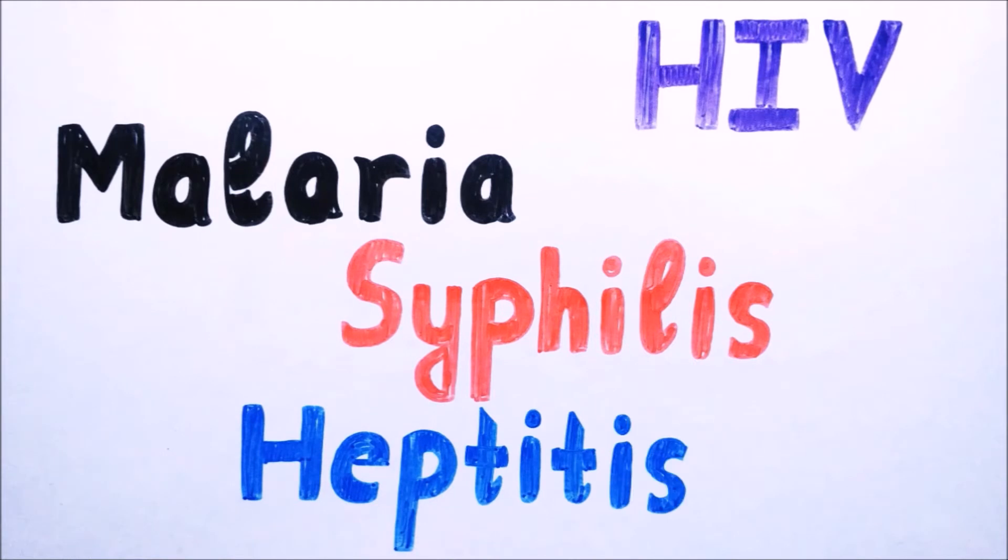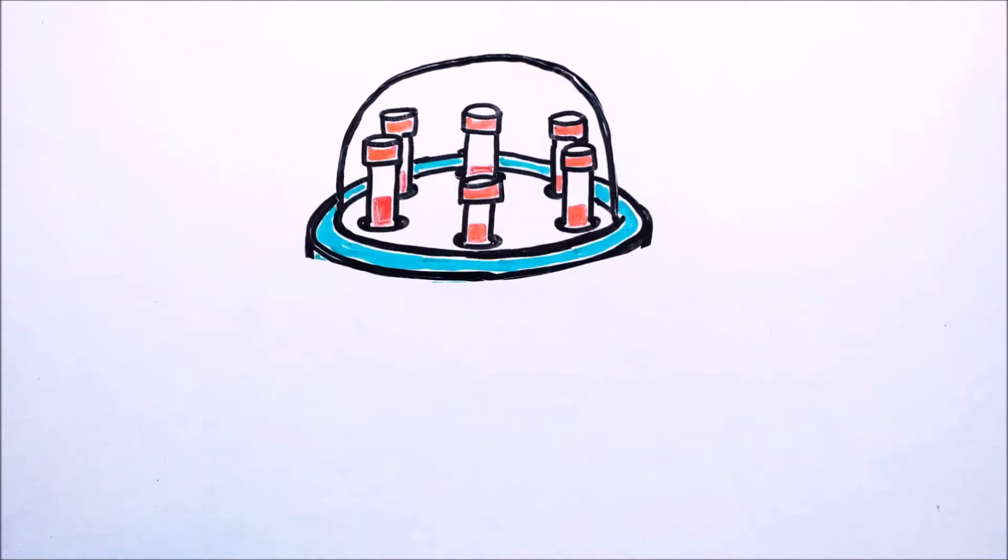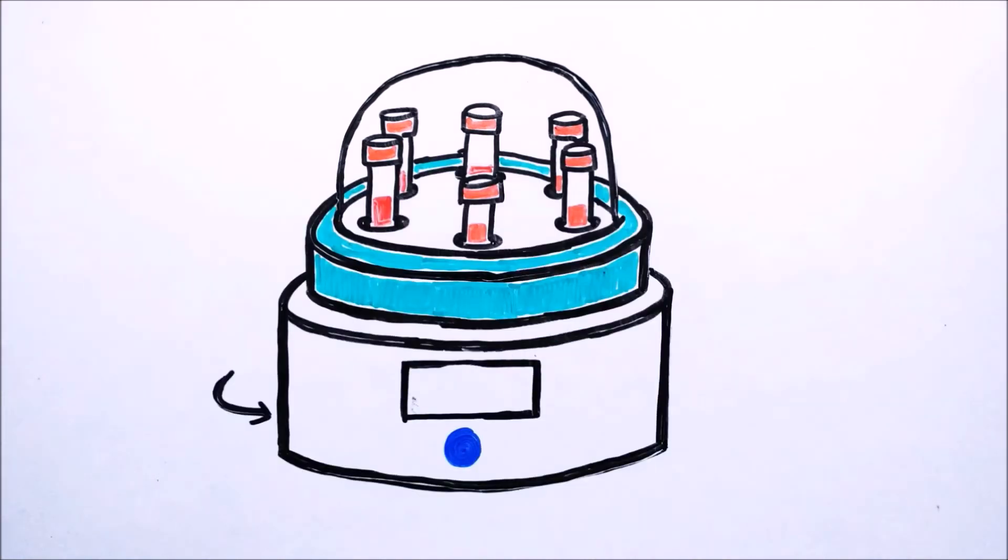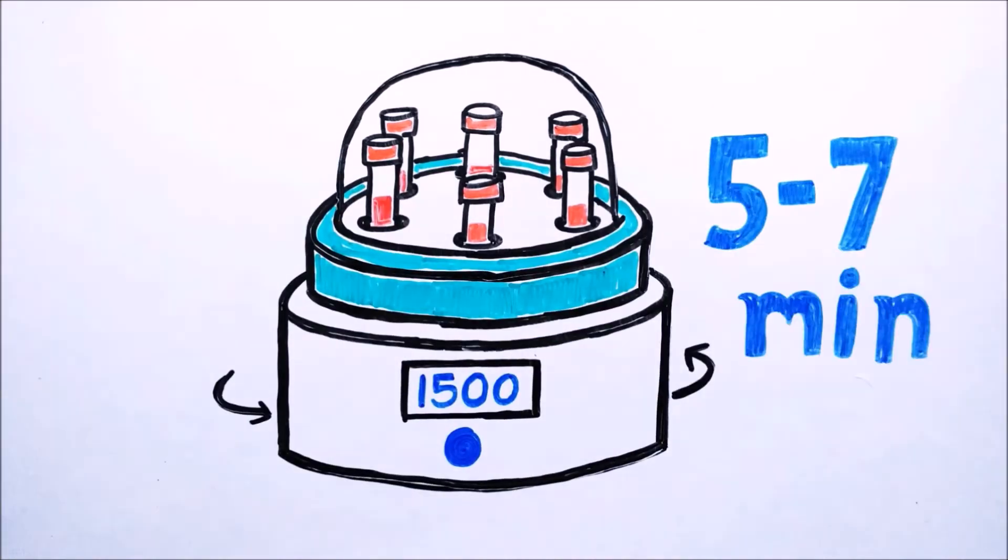After passing this examination, the blood is transferred to a centrifuge. The centrifuge rotates at 1500 g for 5 to 7 minutes. This process creates three layers in the blood sample.